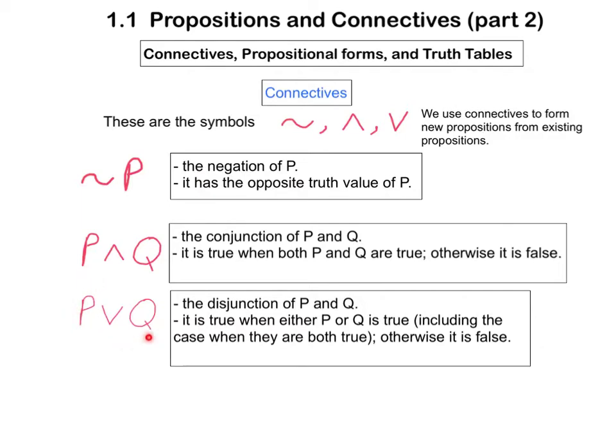This proposition is referred to as the disjunction of P and Q, and it is true when either P or Q is true. So, in three out of four of the possible states of true or false for P and Q, the disjunction is true. So, disjunctions are more often true than false.